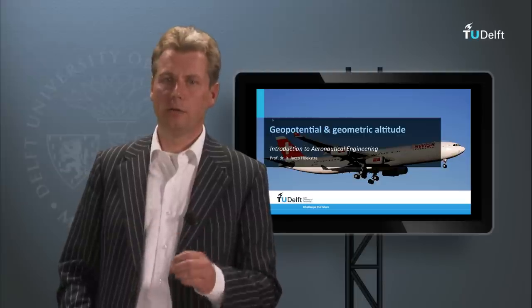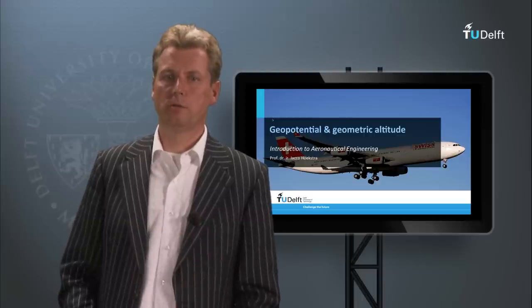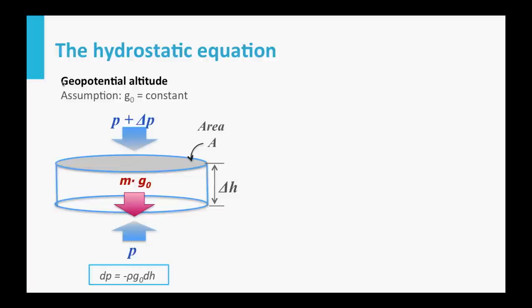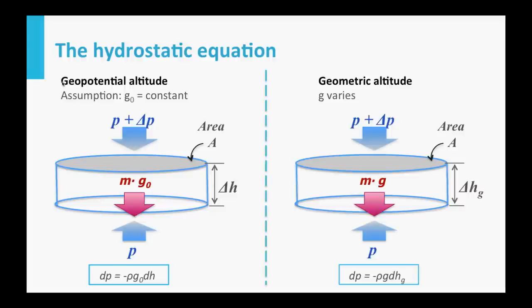Let's have a look at our little disk of air which we use in the hydrostatic equation. We used a standard constant g throughout our equations — a standard gravity acceleration. But in reality, if you go up in the atmosphere, the g changes. And this means that we are actually wrong with our altitude.